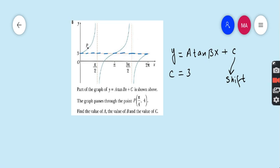Very easy to find, isn't it? C is the y-intercept in tangent function. Now coming to B, B is related to the period.